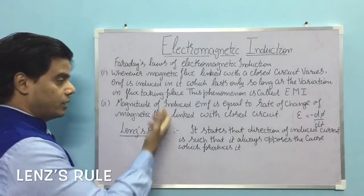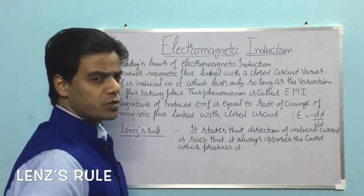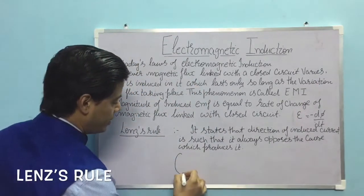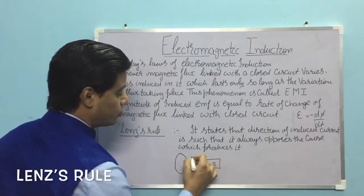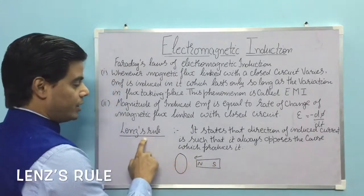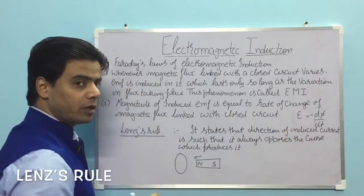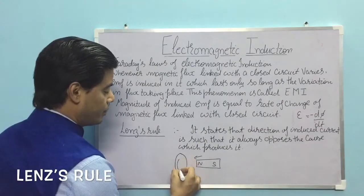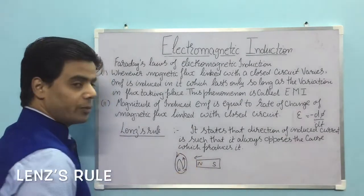The negative sign in EMF = −dΦ/dt is explained by Lenz's rule. Lenz's rule states that the direction of induced current is such that it always opposes the cause which produces it. For example, if a magnet with its north pole coming towards the coil, Lenz's rule says the coil will oppose this cause — the movement of the north pole towards it — which can be done only by developing a north polarity on that face. Therefore the direction of current on that face will be anticlockwise.